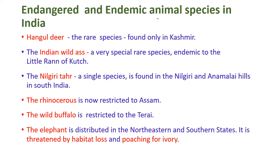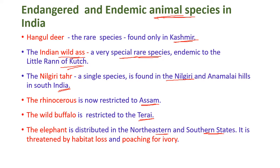Among endangered and endemic animal species in India: the Hangul deer is a rare species found only in Kashmir. The Indian wild ass is endemic to the Little Rann of Kutch. The Nilgiri tahr is a single species found in the Nilgiris and Anaimalai Hills of South India. The rhinoceros is now restricted to Assam, the wild buffalo to the Tarai region, and the elephant is distributed across northeastern and southern India, threatened by habitat loss and poaching for ivory.